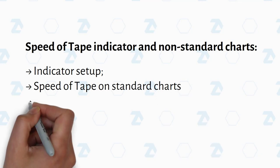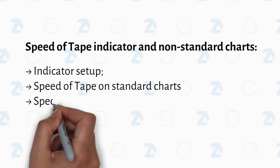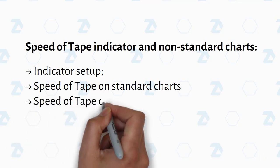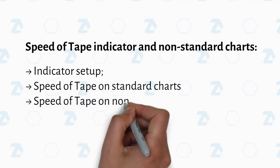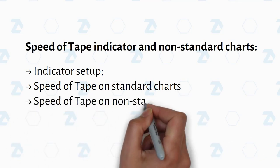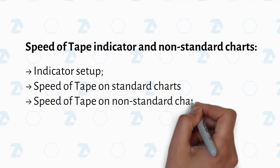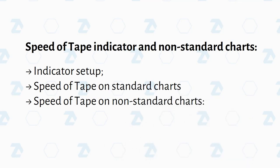What the speed of tape shows, how to set up the indicator, distinguishing features of the indicator on standard charts, and analysis of indicator readings on tick and range charts.